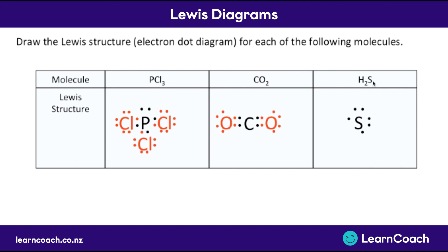Finally, for H2S: sulfur has six outer electrons and each hydrogen has one, so they're going to want to share one each, making H2S. Hydrogen ends up with two outer electrons and sulfur has eight — all outer shells are complete. This is how you draw Lewis diagrams, which show the electron sharing in bonds.